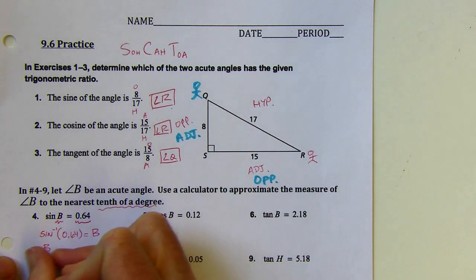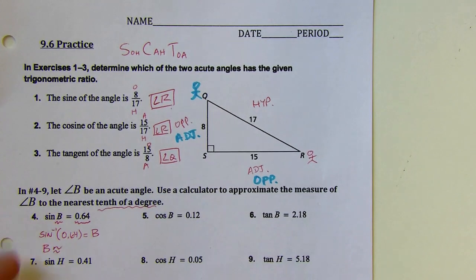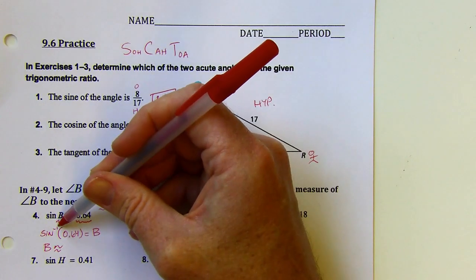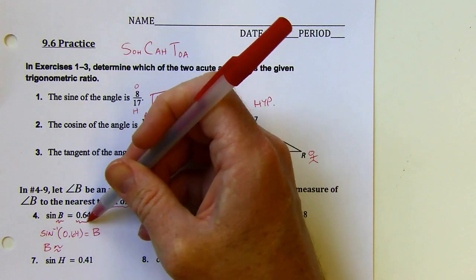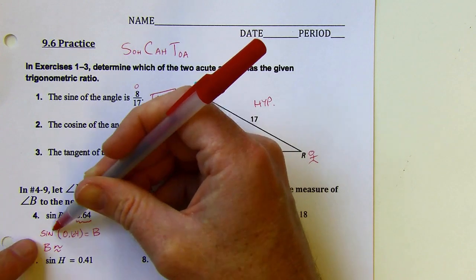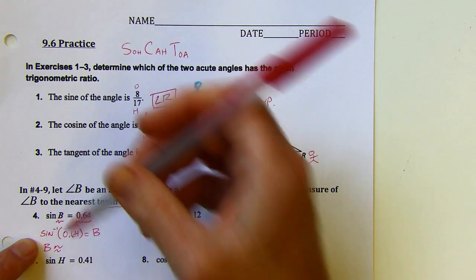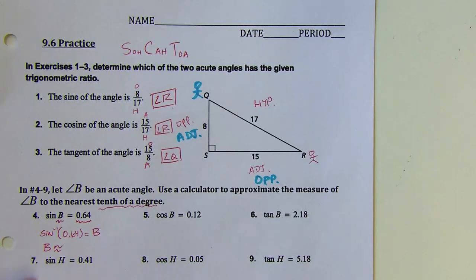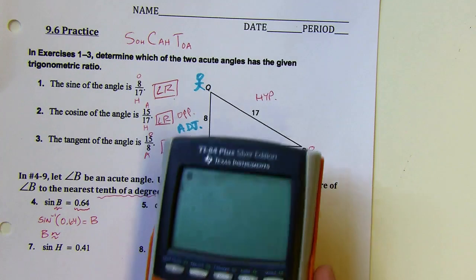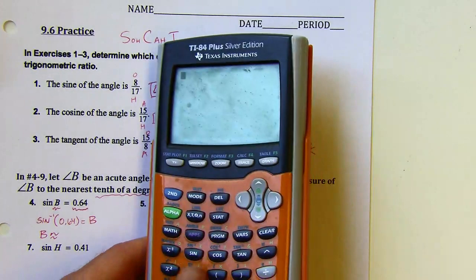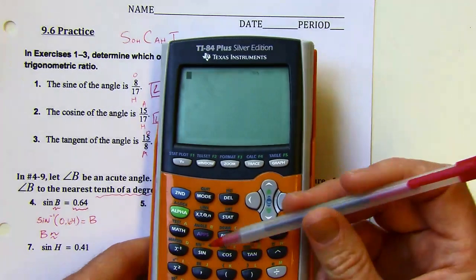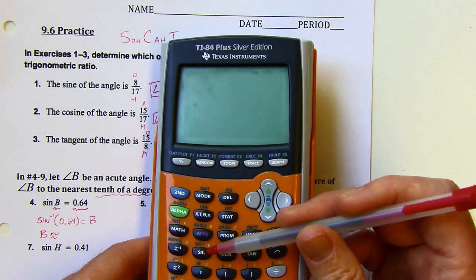I'm going to take the inverse sine. Notice the negative one exponent is on the sine — it's different if you raise the contents of the trig function to the negative first. This just means inverse sine, and sometimes you might see that written as arc sine — that's the same thing. If you have a sine key, you should have an inverse sine key written right above it.